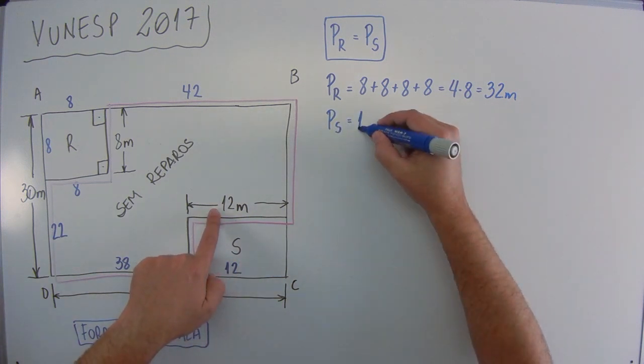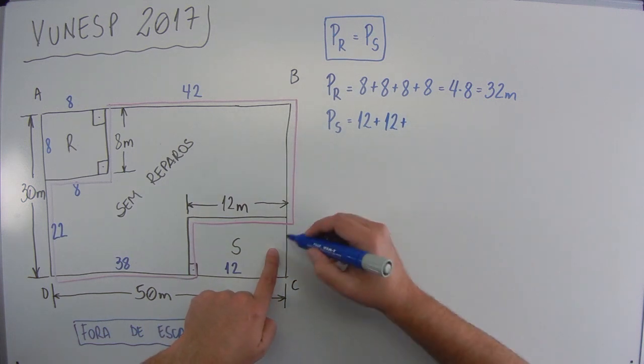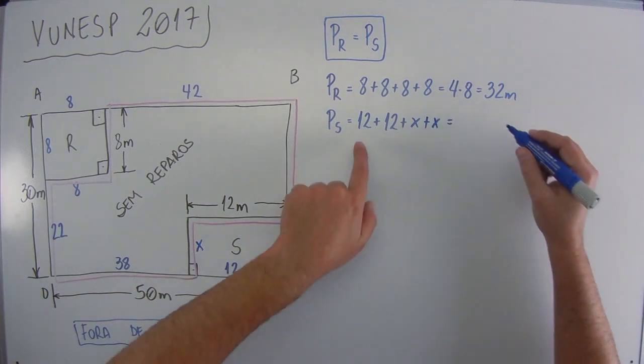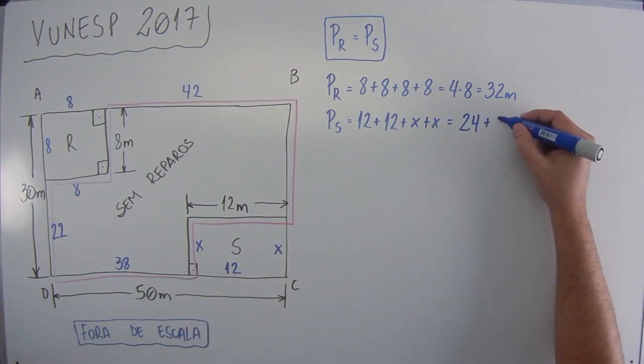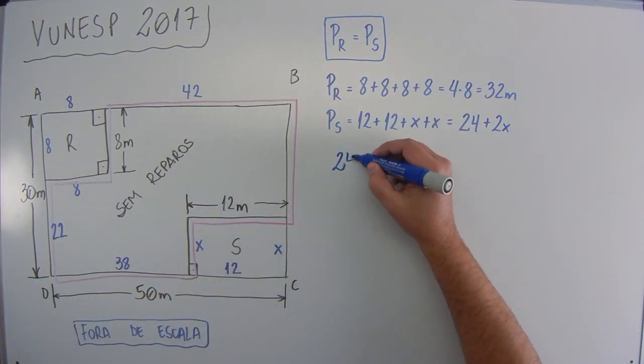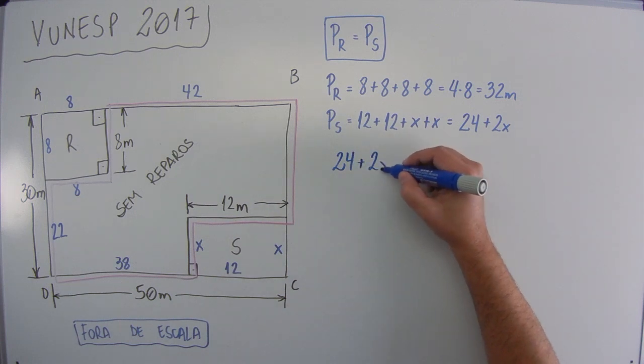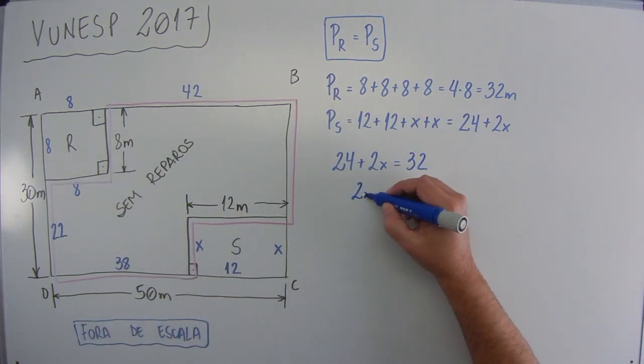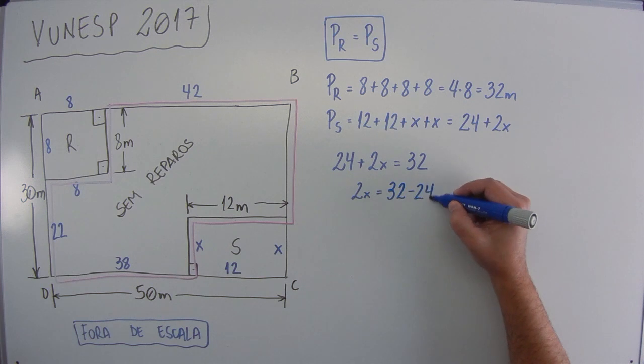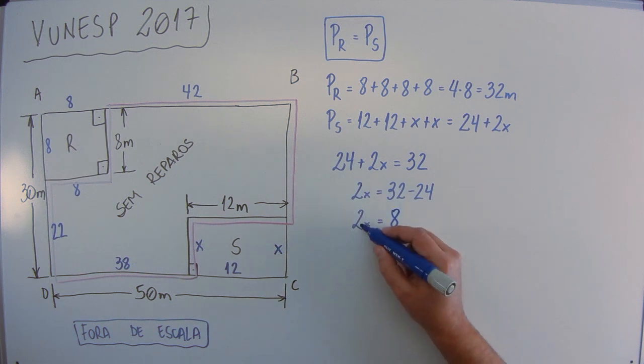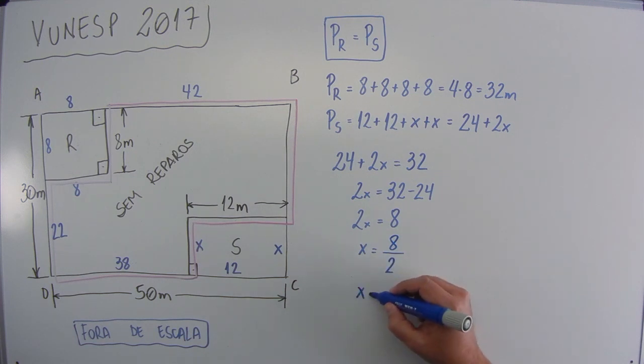E o perímetro de S, que é isso aqui, vai ficar 12 mais 12 mais... Vou colocar X aqui, X, e aqui também é X, mais X. Certo? 12 mais 12, 24. X mais X, 2X. E ele falou que esse perímetro é igual a esse. Então vamos igualar isso. 24 mais 2X igual a 32. Tudo que tem X de um lado, tudo que não tem do outro, então vai ficar 2X igual a 32 menos 24, que esse cara que está positivo passa negativo, 2X igual a 8. Esse 2 que está multiplicando vai passar dividindo. X igual a 8 dividido por 2, X igual a 4.